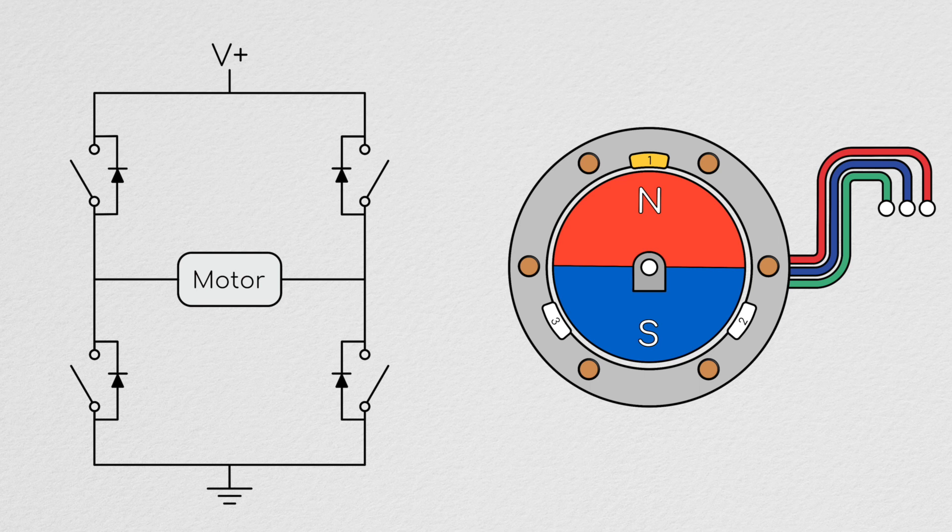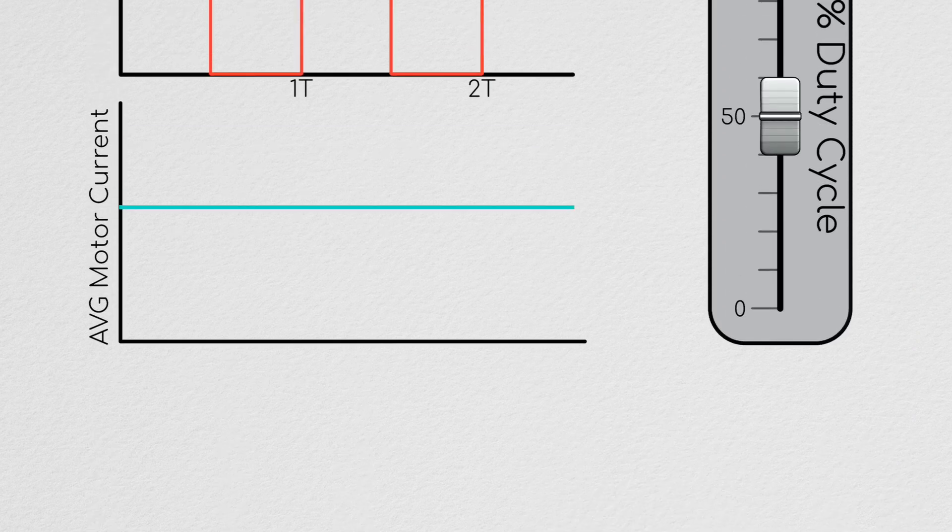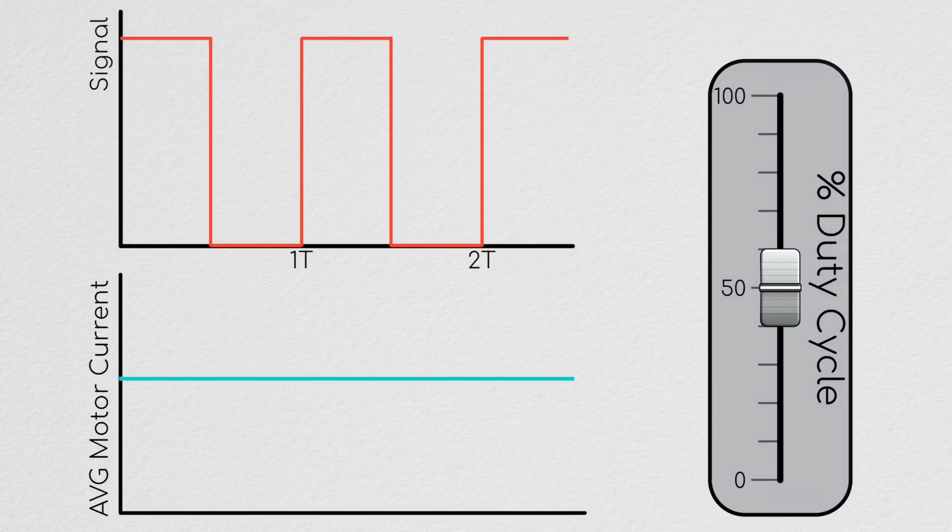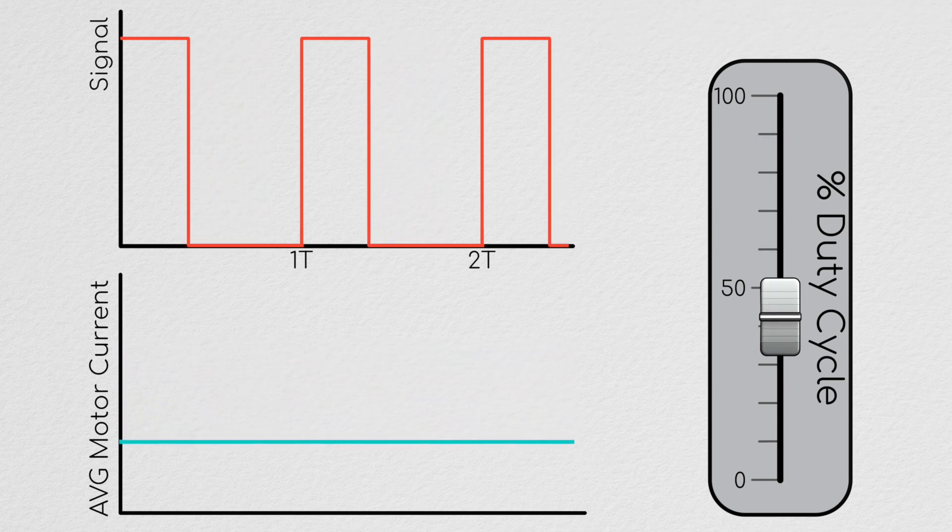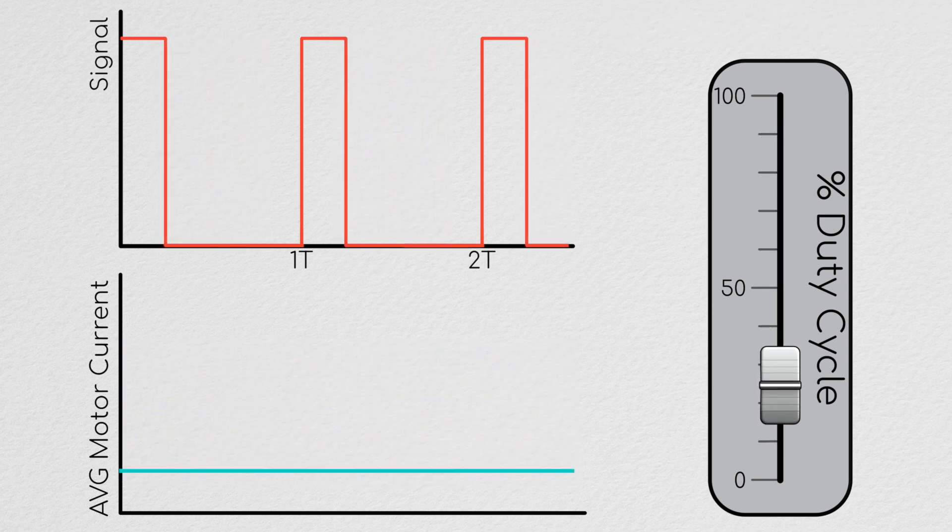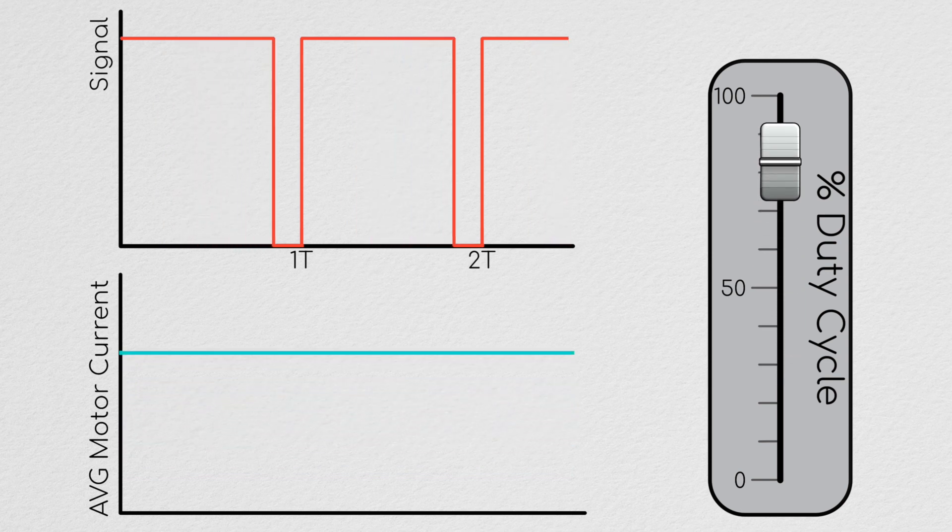In episode 3 we talked about how you can send a pulse width modulated or PWM signal to the MOSFETs on the bridge to vary how much current is running through the motor. If we want a lot of current we send a signal that closes the switch for the majority of the PWM period.